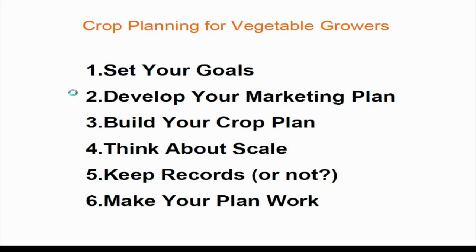We're going to start off by setting goals — where you want to get to. Quality of life is an important part of that, but we're going to talk a lot about dollars and financial goals. By knowing how much you want to make, working backwards, you figure out your marketing plan — what do you need to sell and who are you going to sell it to in order to make the revenue you're targeting. Once you've figured out what you're going to grow and how you want to sell it, you figure out how to grow the crop to make that — that's the crop plan. Feel free to ask questions as you go along.